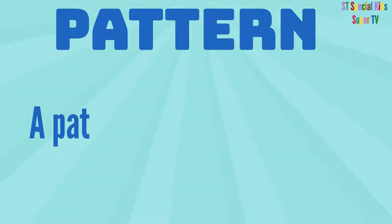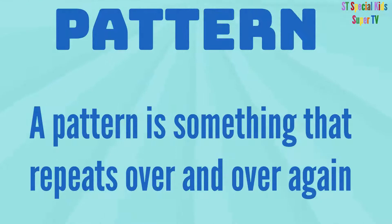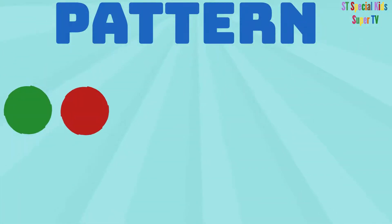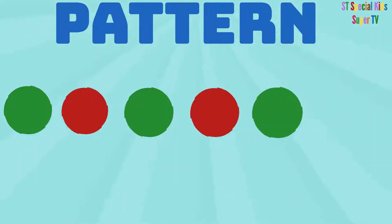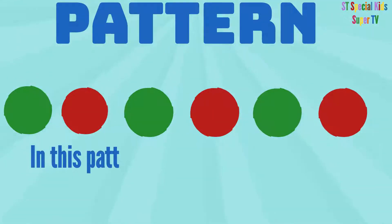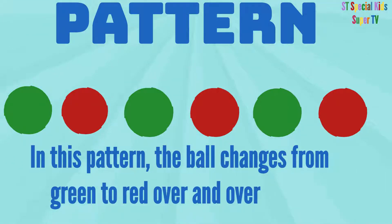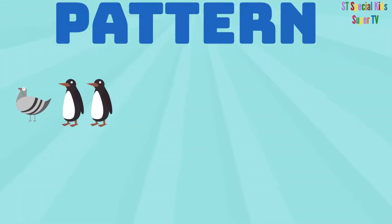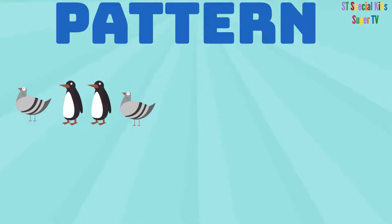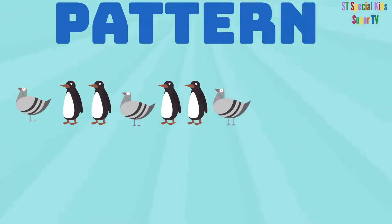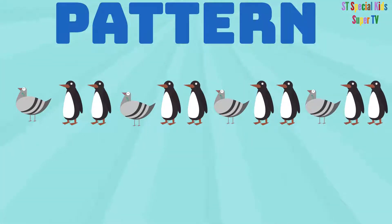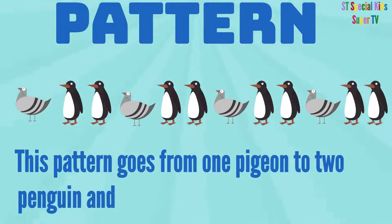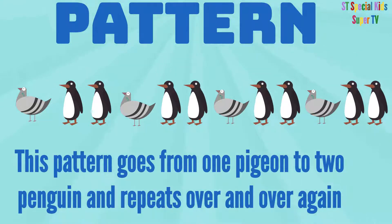A pattern is something that repeats over and over again. In this pattern, the ball changes from green to red over and over again. This pattern goes from one pigeon to two penguins and repeats itself over and over again.